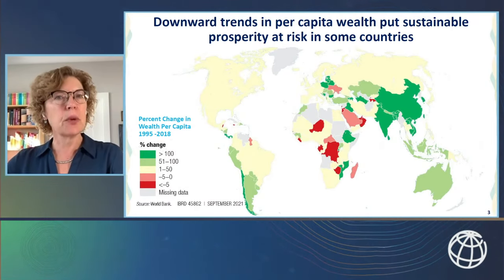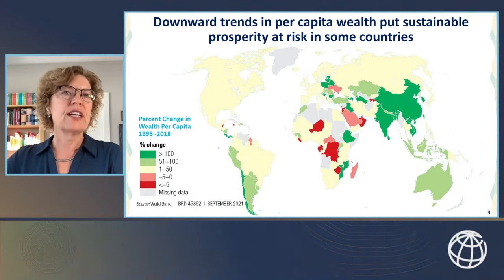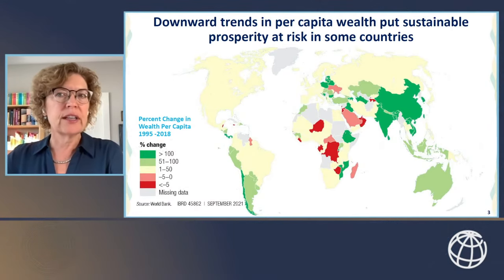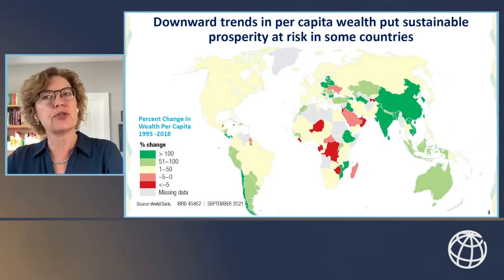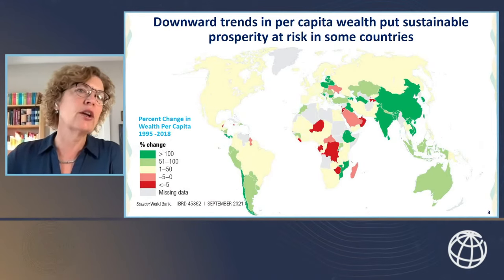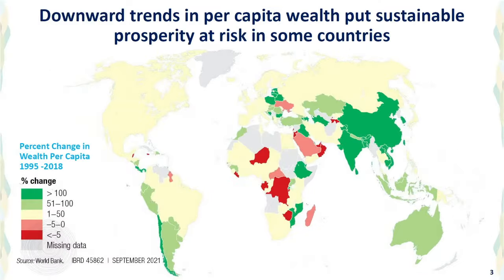The countries most at risk include fragile, conflict-affected, resource-rich, and low-income states. If the trend continues, future generations in these countries will be worse off than present generations.